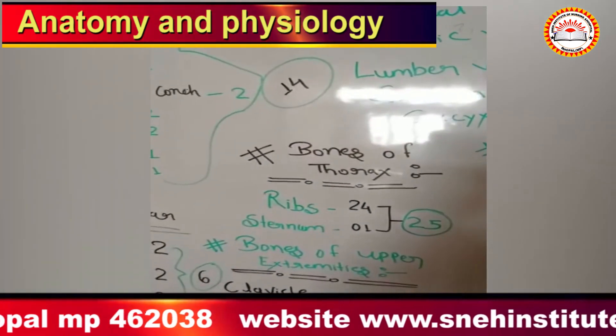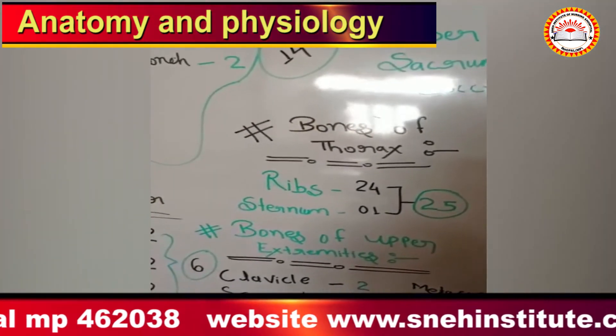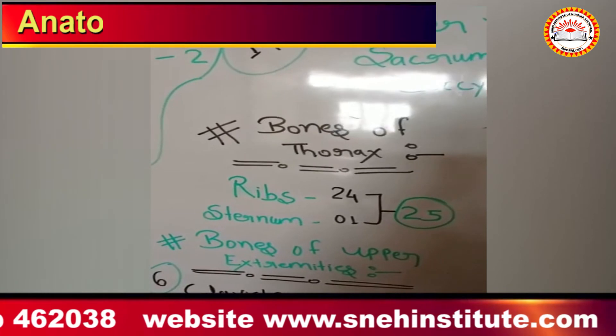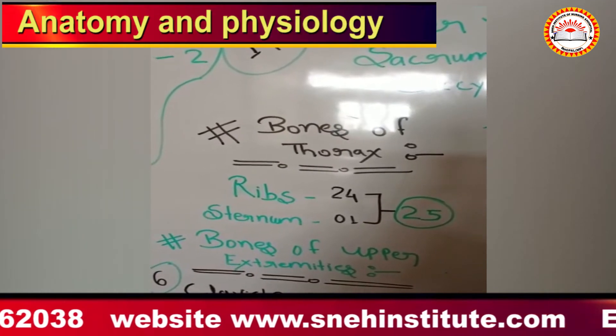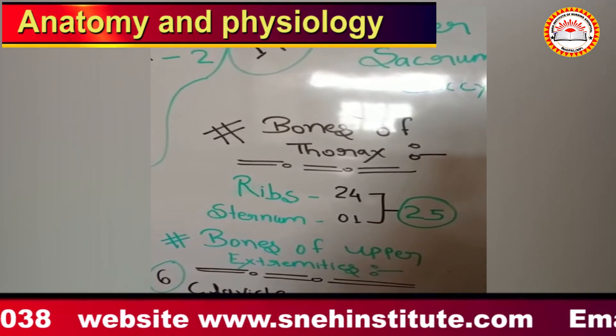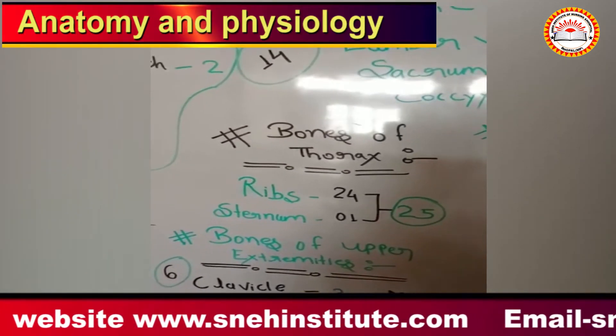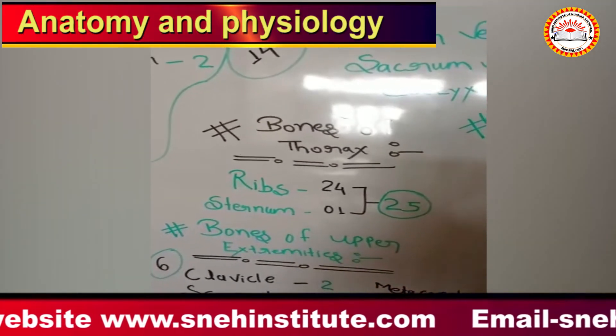You can see the bones of the thorax — total number of 25 thorax bones: ribs 24 and sternum 1.